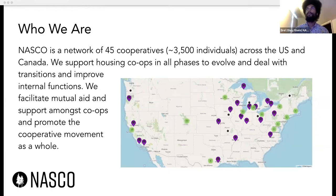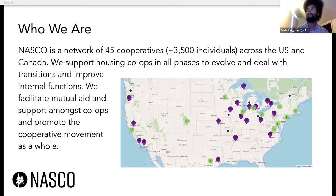So today we're going to be talking about housing co-ops. NASCO is a network of 45 housing cooperatives that have about 3,500 individual residents across the United States and Canada. We support housing co-ops in all phases to evolve and deal with transitions, as well as to improve internal functions.